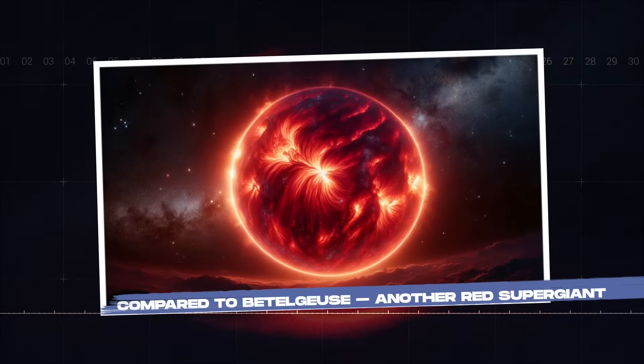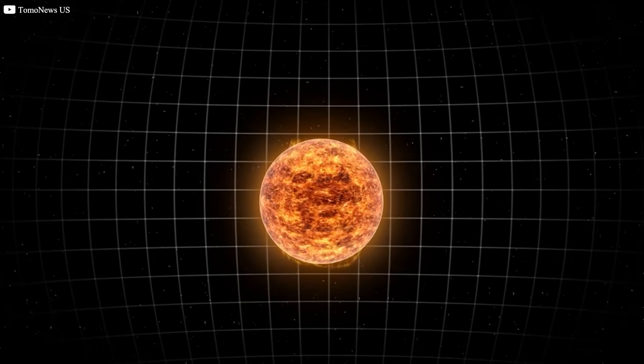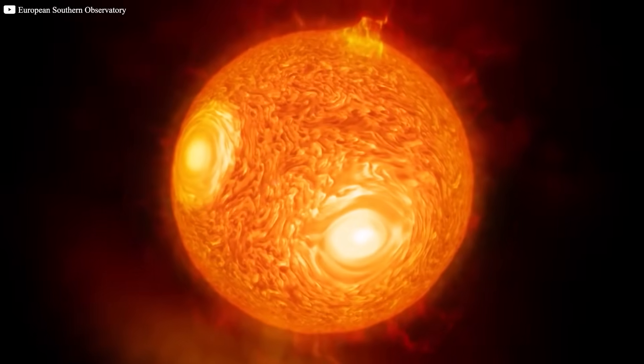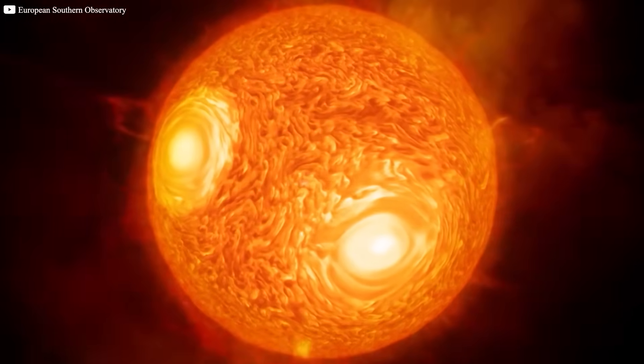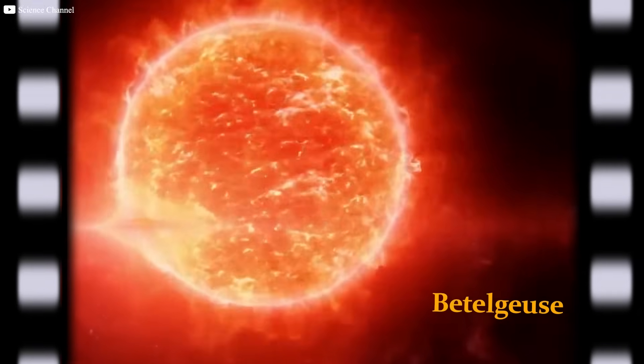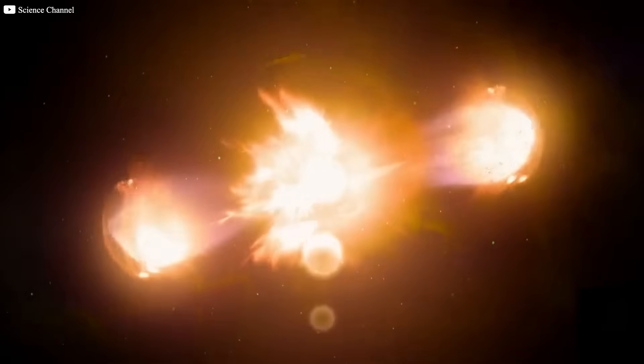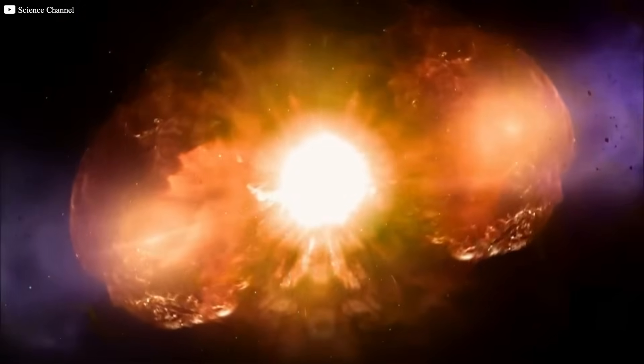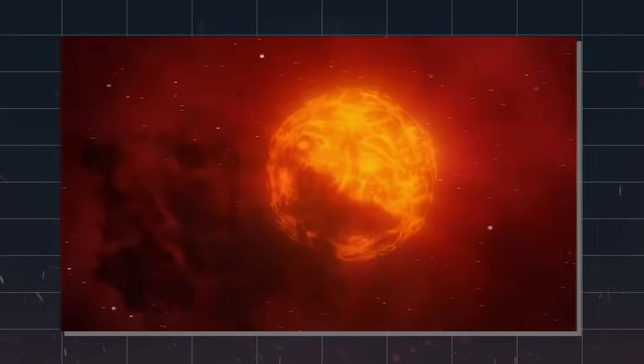Compared to Betelgeuse, another red supergiant, Antares may be on the brink of a supernova, but it's not the only red supergiant that has captured the imagination of astronomers. Another star, Betelgeuse, located in the constellation Orion, has also been under close observation due to its potential to explode in a supernova. Like Antares, Betelgeuse is a massive red supergiant nearing the end of its life.